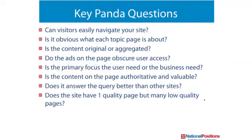Do the ads on the page obscure user access? A lot of websites were negatively impacted by Panda because they had way too many ads or graphic elements on the page that were obscuring user access, making it difficult for users to move around the site. How is Google able to measure where things are on the page? This is why Panda is such an amazing thing — the learning machine is able to simulate the user experience. It can look at the ads or other graphic elements on the page and decide this is not a user-friendly web page.